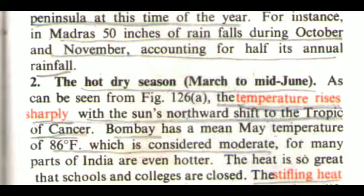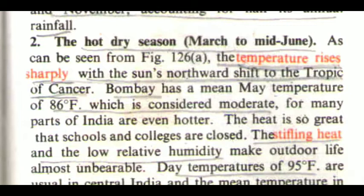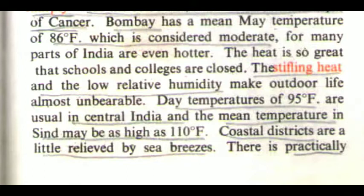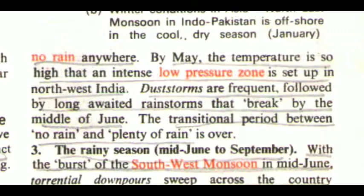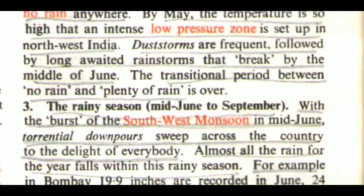The second season is the hot dry season, March to mid-June. The temperature rises sharply with the sun's northward shift to the Tropic of Cancer. Bombay has a mean May temperature of 86 degrees Fahrenheit, which is considered moderate, for many parts of India are even hotter. The heat is so great that schools and colleges are closed. Day temperatures of 95 degrees Fahrenheit are usual in central India, and the mean temperature in Sindh may be as high as 110 degrees Fahrenheit. Coastal districts are a little relieved by sea breezes. There is practically no rain anywhere. By May, the temperature is so high that an intense low-pressure zone is set up in northwest India. Dust storms are frequent, followed by long-awaited rainstorms that break by the middle of June.